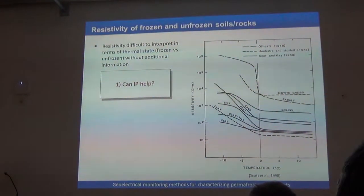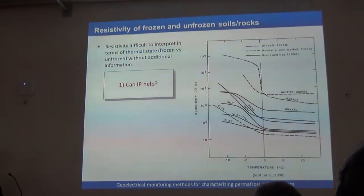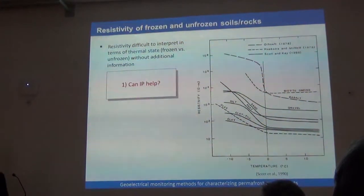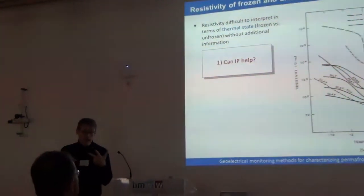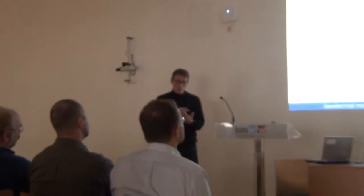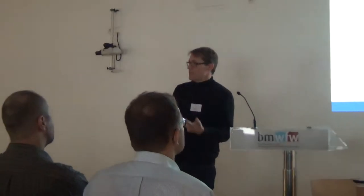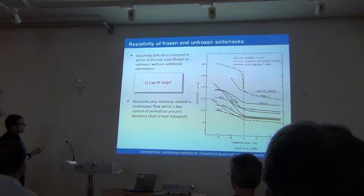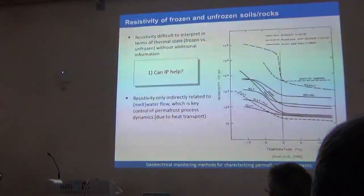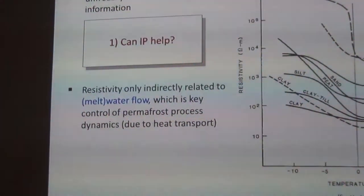This led us to the question: can IP - induced polarization - perhaps help? That will be one component where I'll present some laboratory results. The other thing is thinking about process dynamics. For a permafrost system we have coupled thermal, hydro, mechanical, highly non-linear processes. We may be able to measure and monitor thermal state with resistivity, but we're not sensitive directly to flow dynamics. This led us to the idea of using self-potential monitoring in such permafrost environments, with the idea of getting a streaming potential signature indicative of flow and meltwater flow preferential pathways.